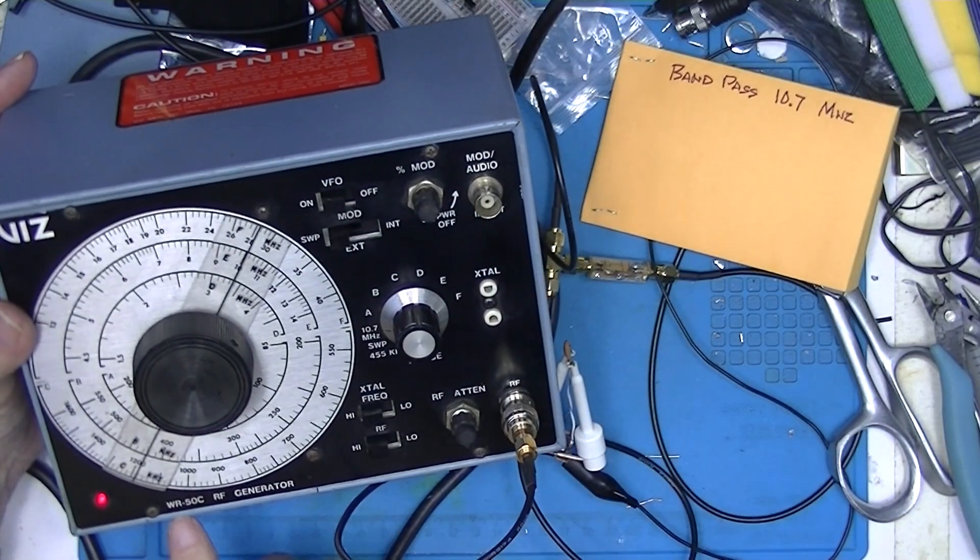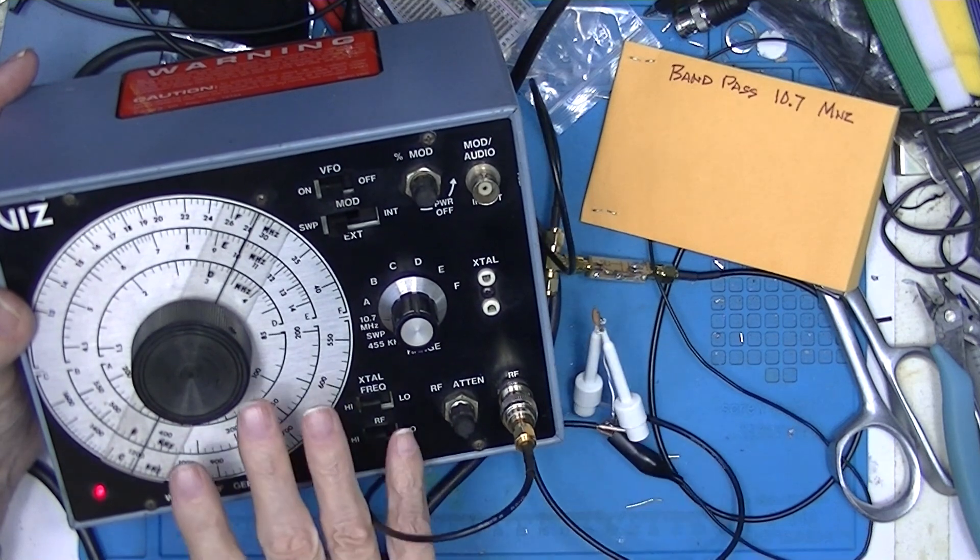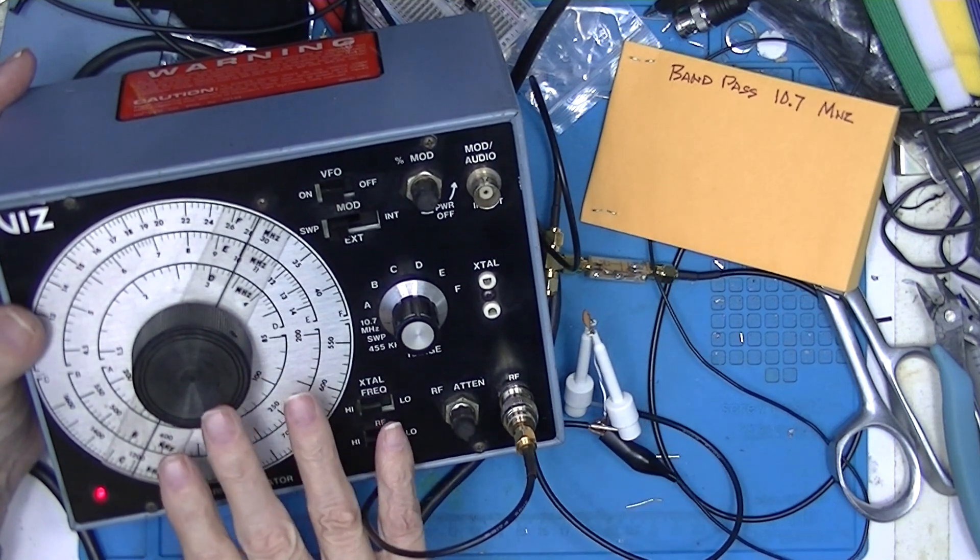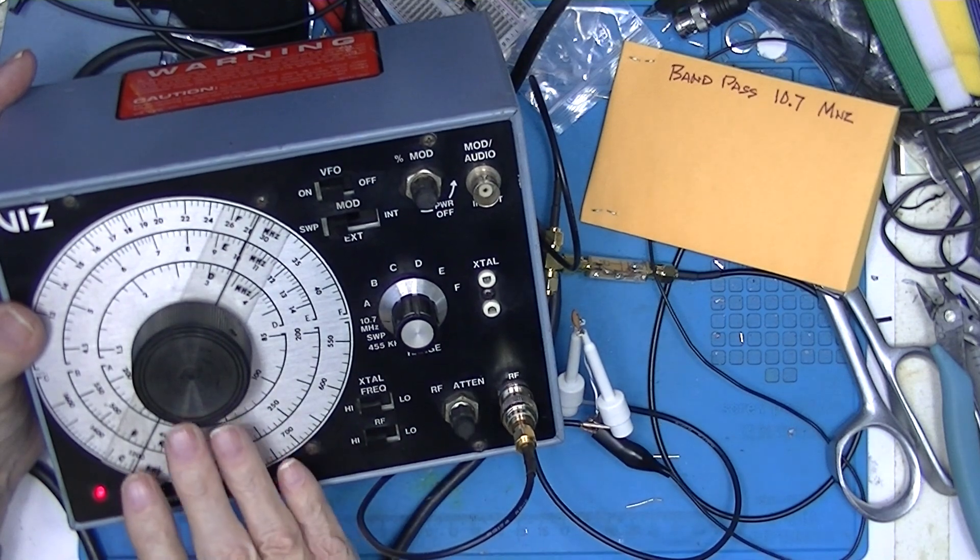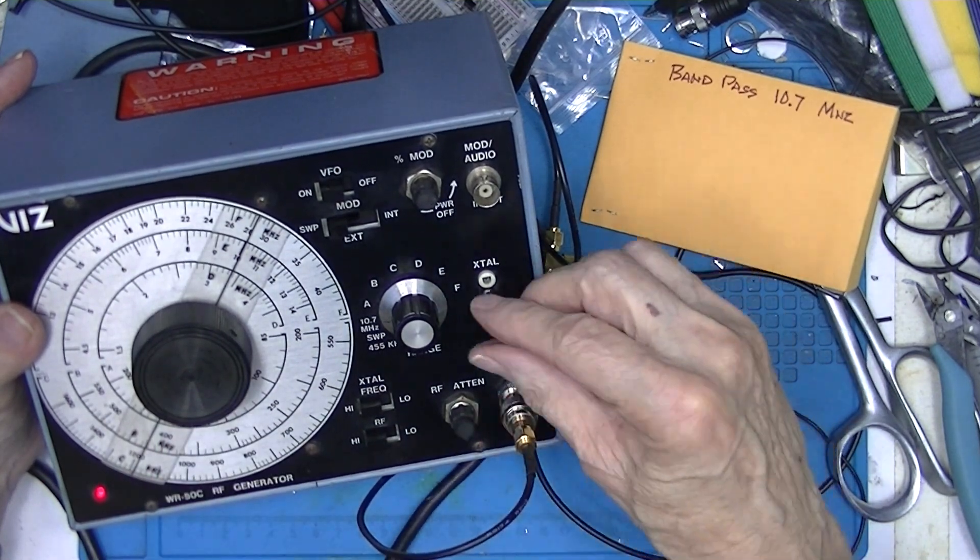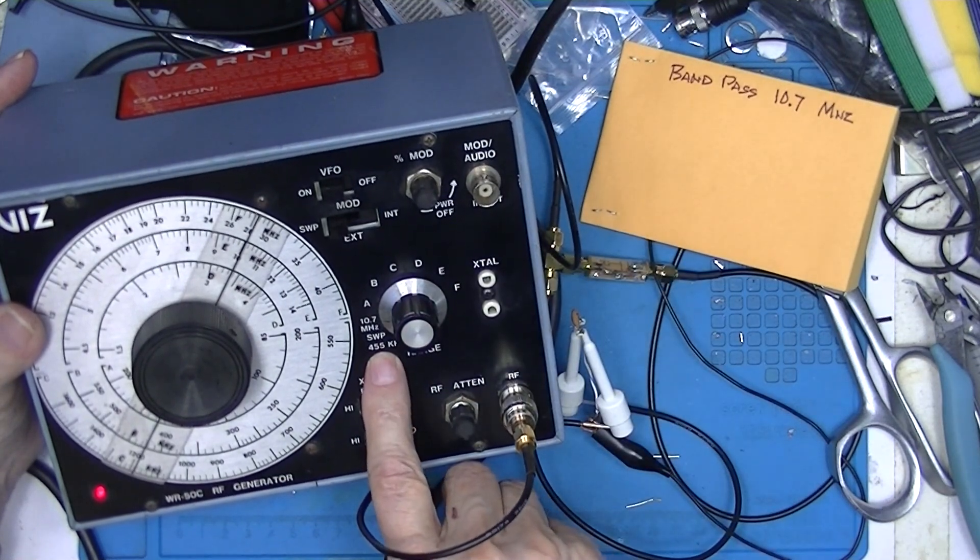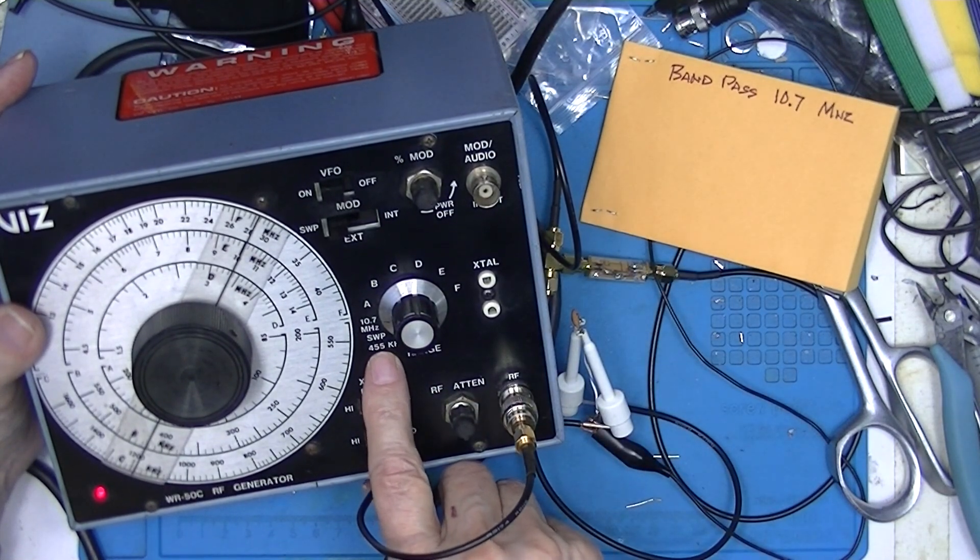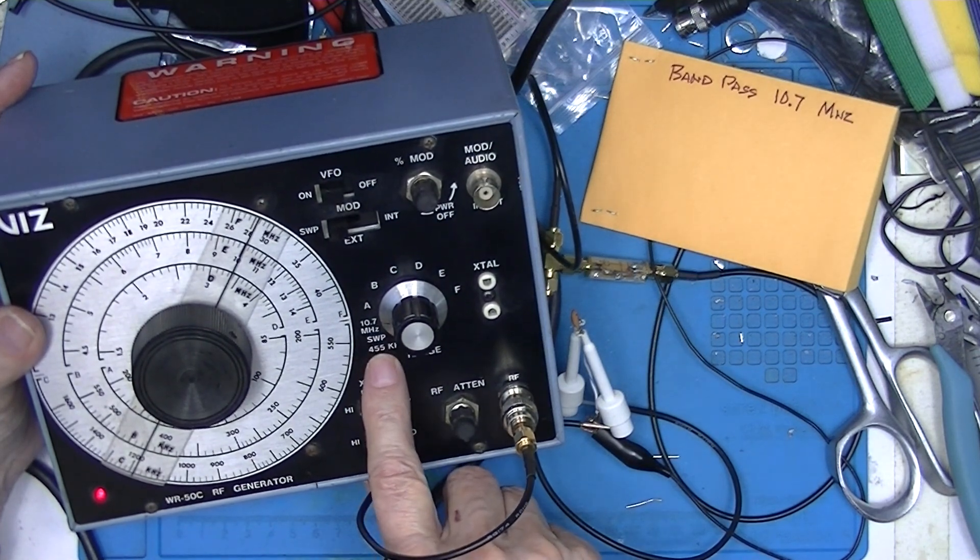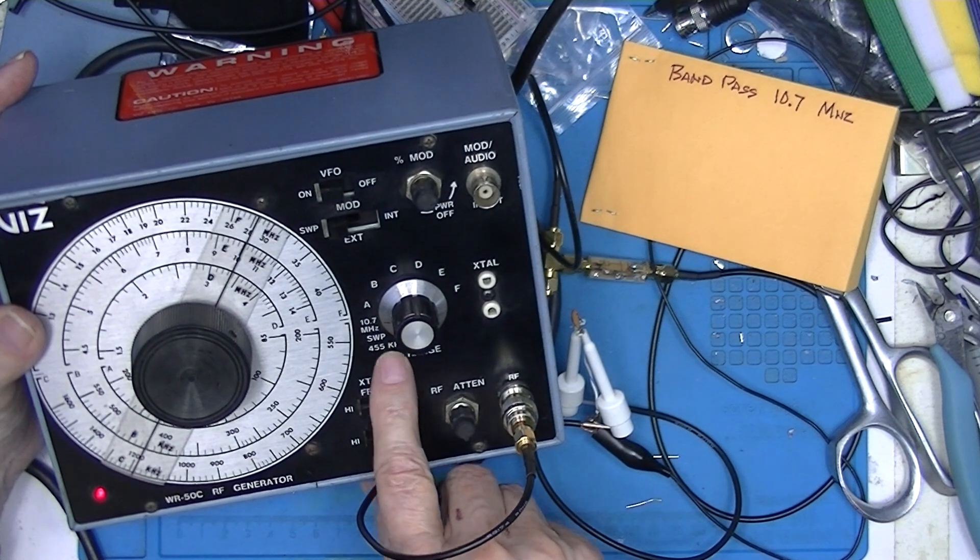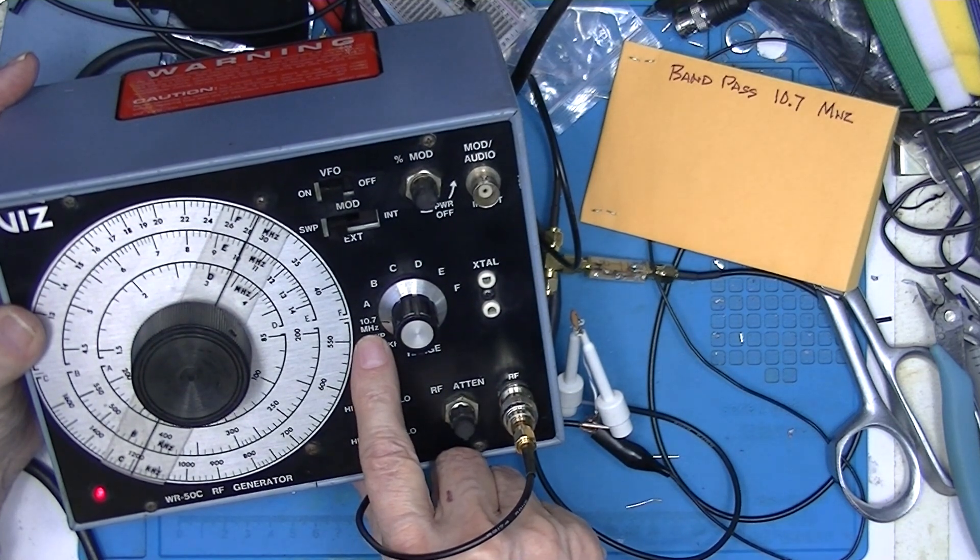Because this WR50 A, B or C was designed for AM and FM radio or receiver work. It uses these two sweep frequencies, which are typical IF frequencies or intermediate frequencies in the radios. 455 kilohertz in AM radios, 10.7 megahertz in FM radios.